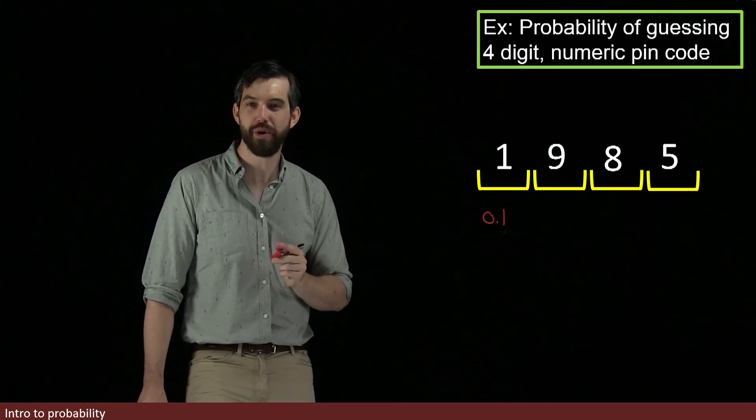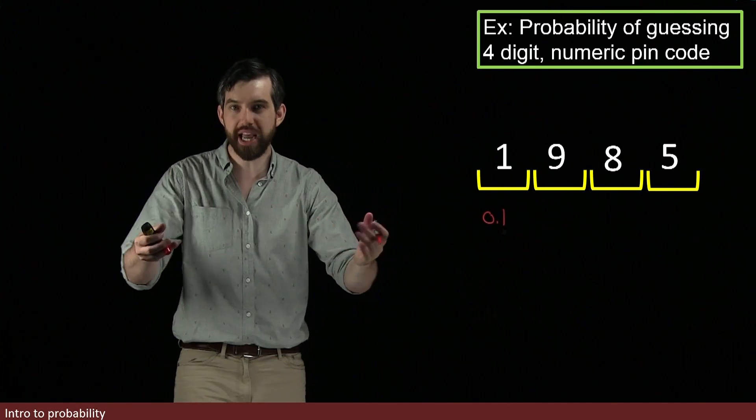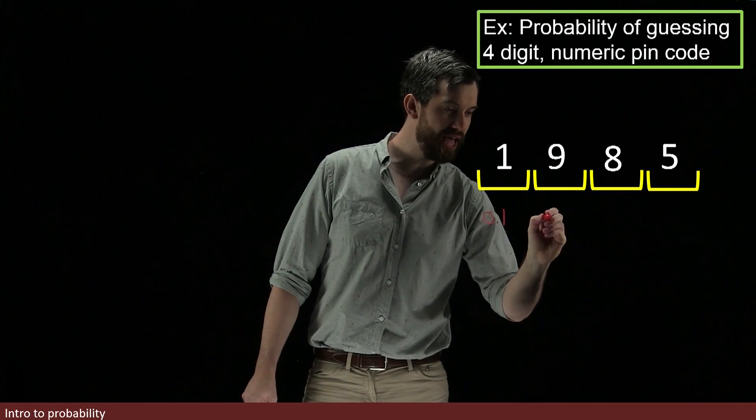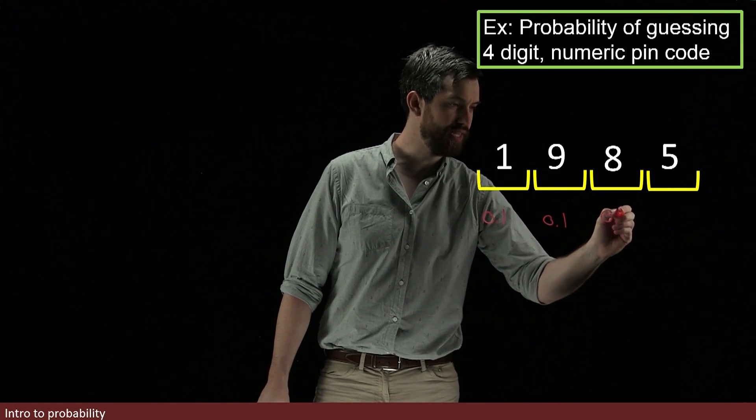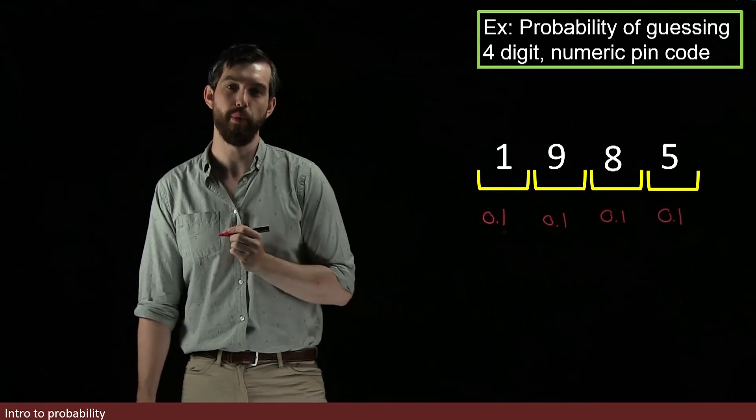Likewise for the second. If the question is, what is the chance I get correct your second digit? Still only ten possibilities, so I'm going to still have a 0.1 here. Likewise for the third, a 0.1. Likewise for the fourth, another 0.1.